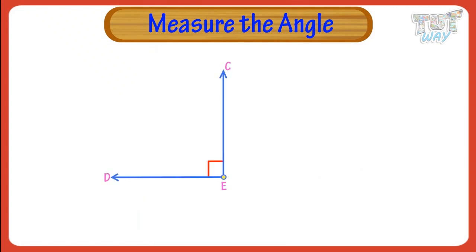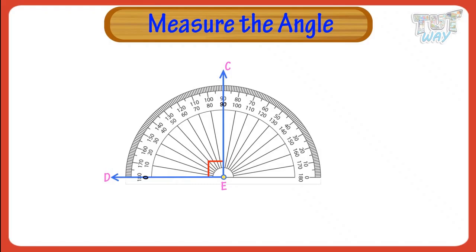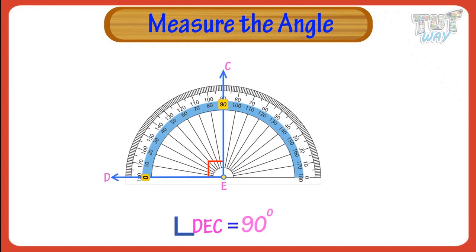Now let's measure another angle. To measure the size of angle CDE, place the protractor over the angle so that the center of the protractor is directly over the angle's vertex, that is E, and the baseline of the protractor is along the arm E-D. We use the inner scale to measure angle DEC, as the arm D-E passes through the zero of the inner scale. Following the inner scale around the protractor, we find that the other arm E-C passes through the inner scale at 90 degrees. So the size of angle DEC is 90 degrees.